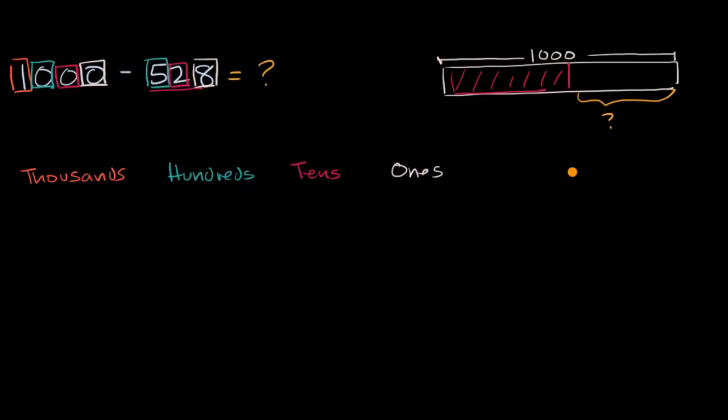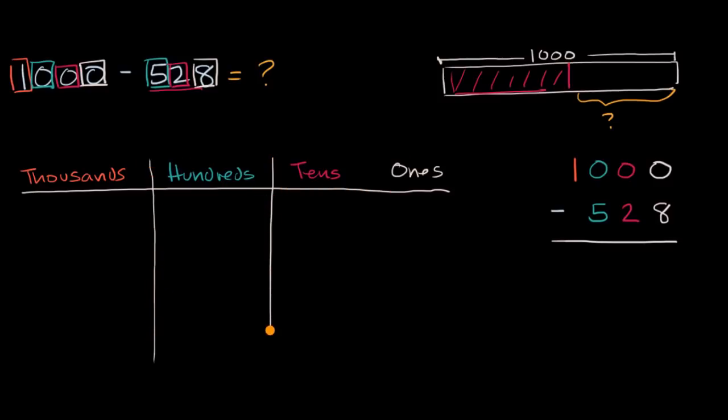Now let me also rewrite these numbers and I'm gonna do it using the standard method. So I have 1000, and then I have 0 hundreds, 0 tens, and 0 ones. And from that I am going to subtract 5 hundreds, 2 tens, and 8 ones. So let's do both of these at the same time. And let me make a little bit of a table right over here.